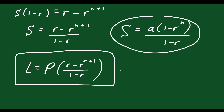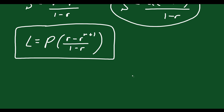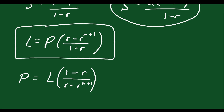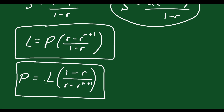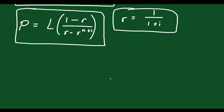Rearranging to solve for P: P equals L times (1 minus r) over (r minus r to the n plus 1). If you know the interest rate you can calculate r — the common ratio — which equals 1 over (1 plus i). Knowing the interest rate i, the number of payments n, and the loan amount L, you can calculate your monthly payments using this geometric series summation formula.